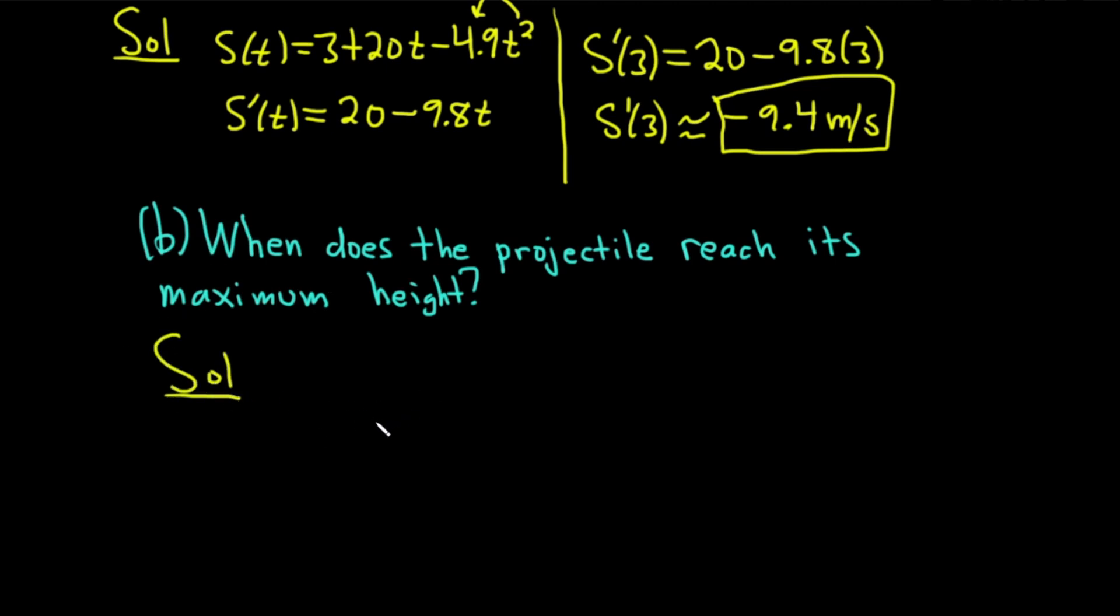So if we throw something up in the air, we have to think about what happens when it reaches its maximum height. So if I have the ground here, and I throw something up in the air, it's going to look like this. And so this is where the maximum height occurs. So what happens there? Well, the velocity is zero. So the maximum height will occur when there's no velocity.